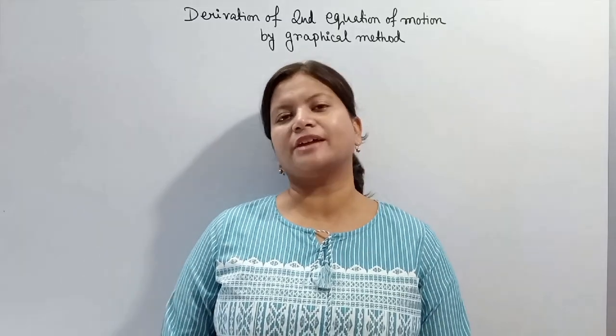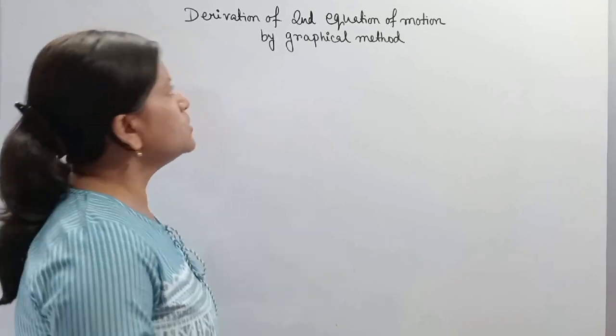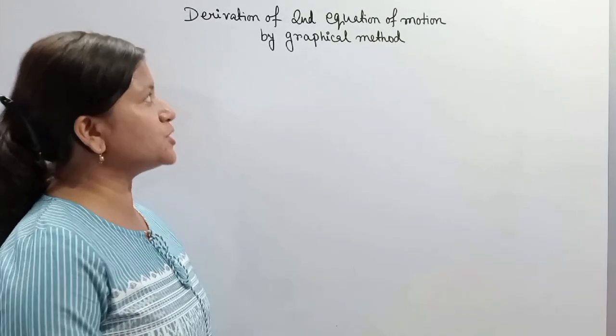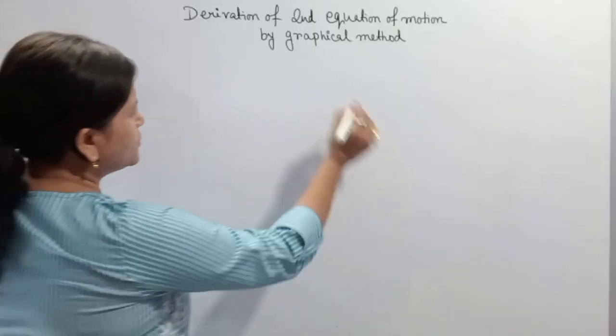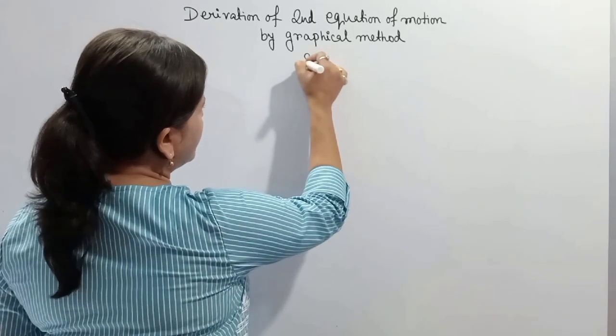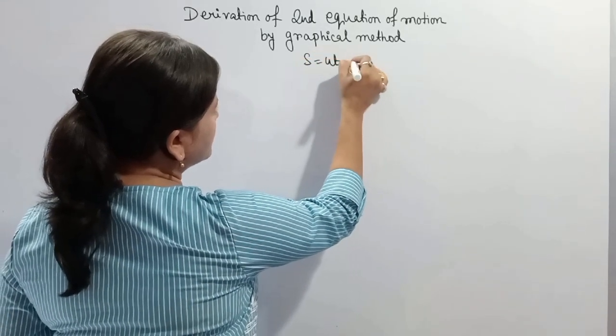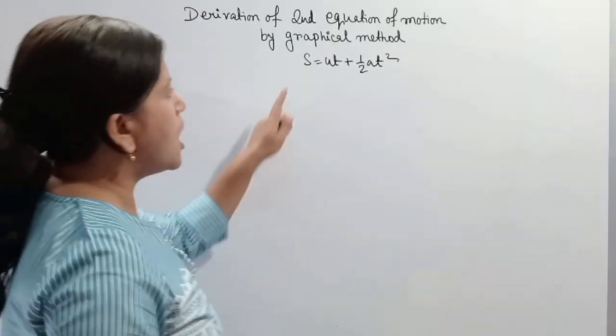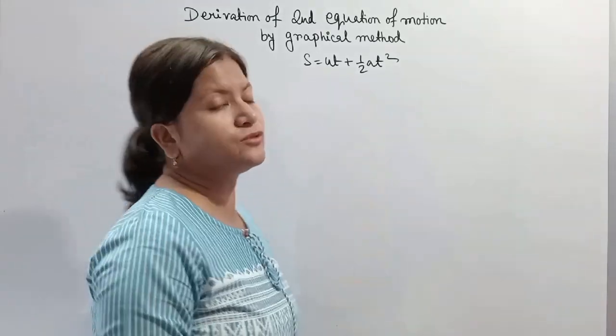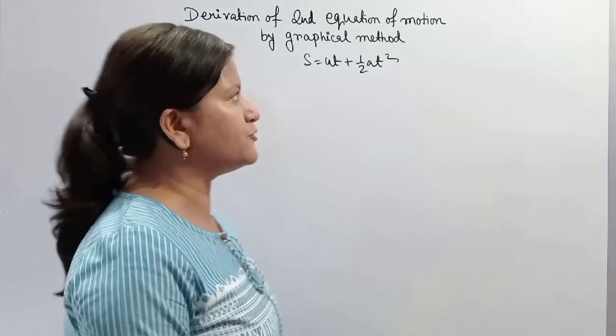Hi students, welcome to Gambit. Today I will show you how to derive the second equation of motion by graphical method. We know that the second equation of motion is s equals ut plus half at square. So today I will show you how to derive s equals ut plus half at square by graphical method.